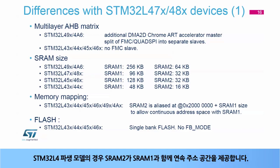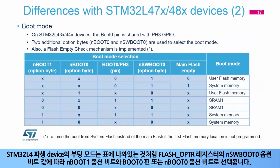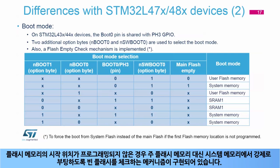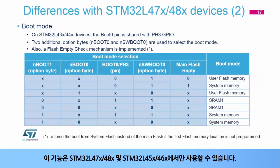On STM32L4 derivatives, SRAM2 is aliased to offer a continuous address space with SRAM1. The boot mode is selected either with the nBoot1 option bit and BOOT0 pin, or with the nBoot0 option bit, depending on the value of the nSW_BOOT0 option bit in the flash OPTR register as shown in the table. A flash empty check mechanism is implemented to force boot from system memory instead of main flash memory if the first flash memory location is not programmed. This feature is only available on STM32L47X/48X and STM32L45X/46X.